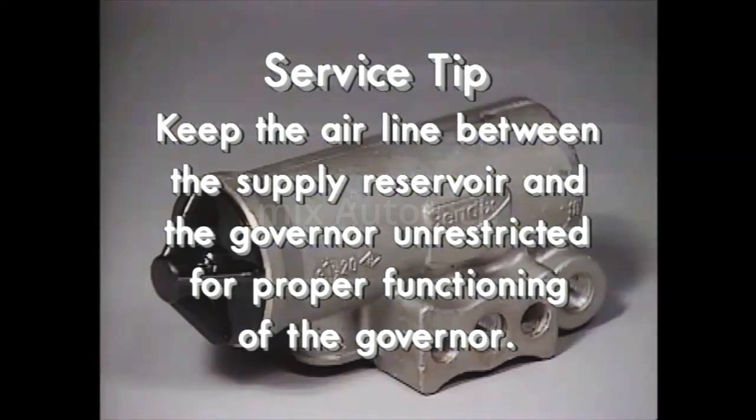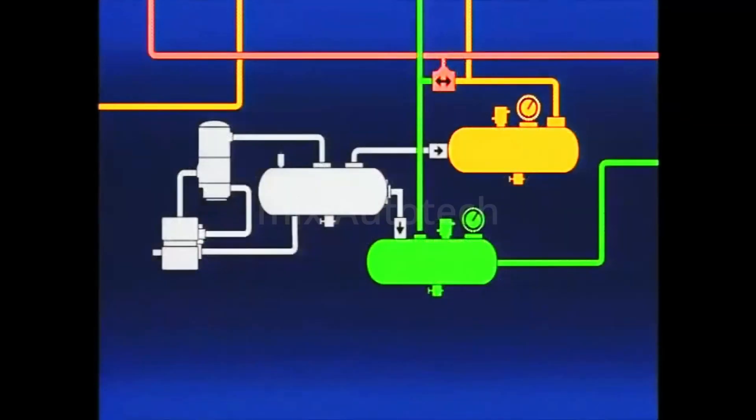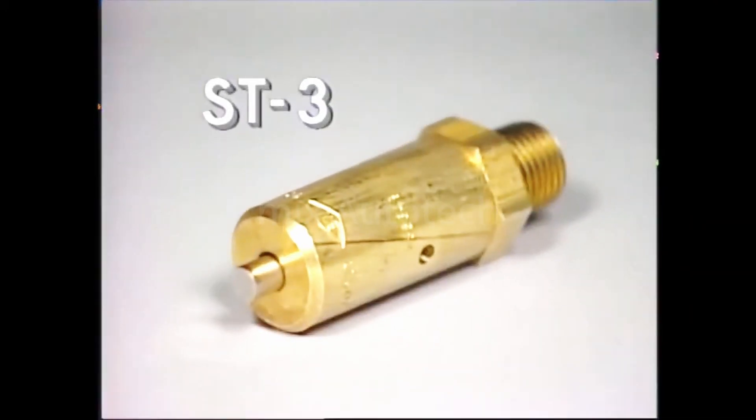If either the governor or compressor unloader mechanism fail to function, the compressor would continue to compress air. To protect the air systems against a failure of either the governor or compressor unloader mechanism, a safety valve like the Bendix ST3 is installed on the supply reservoir or air dryer if the vehicle is so equipped.